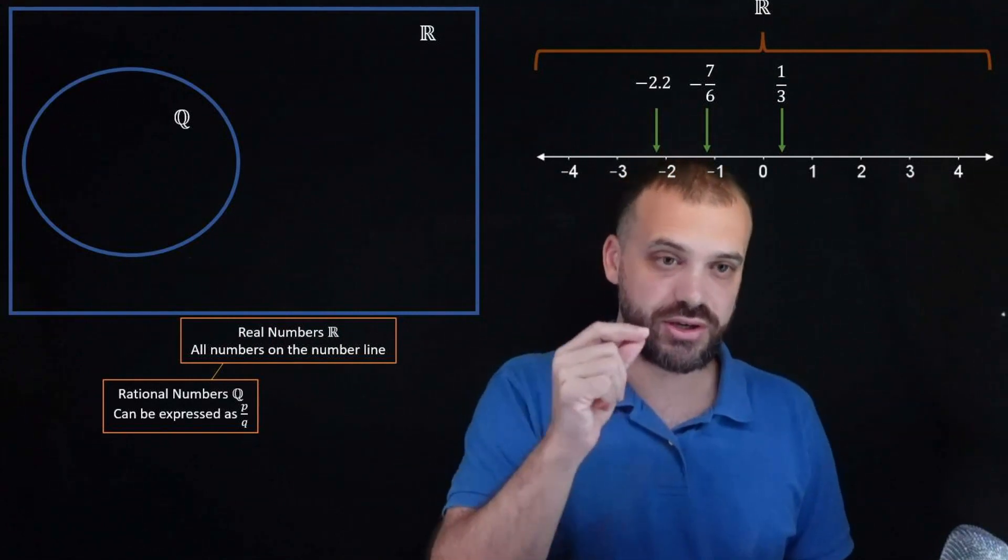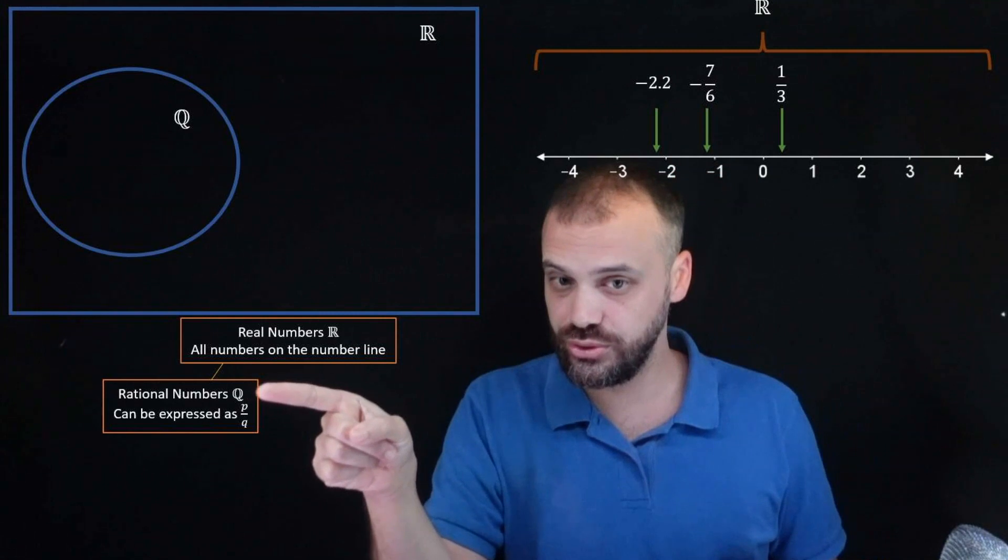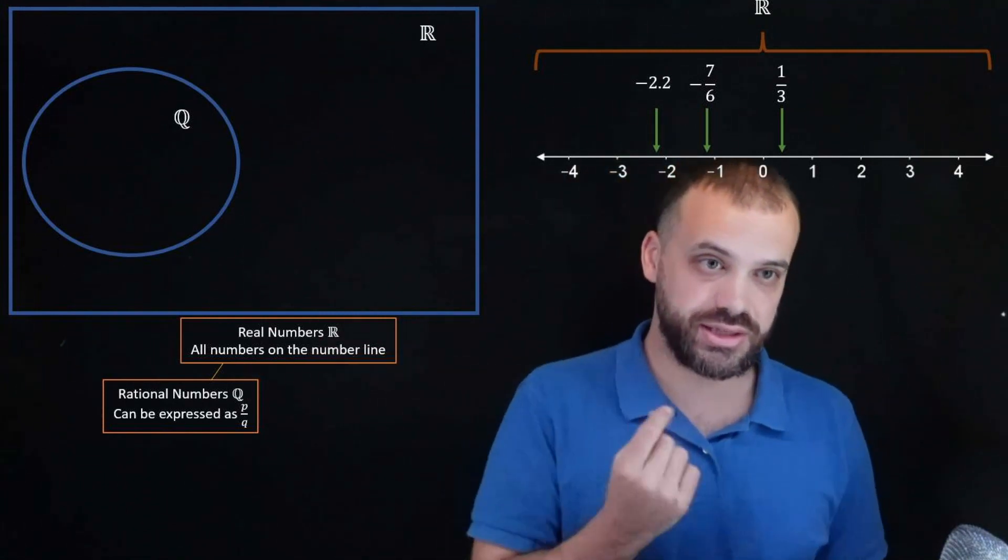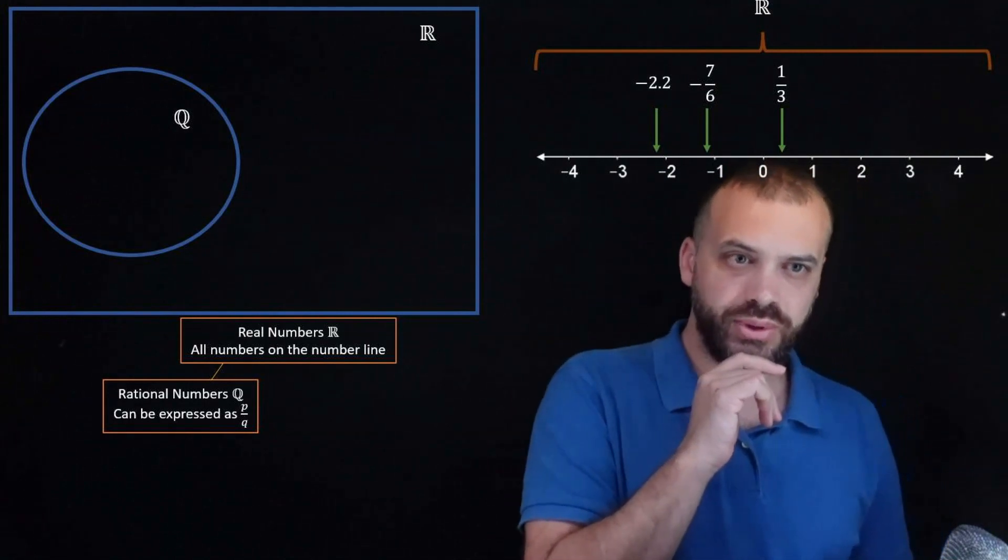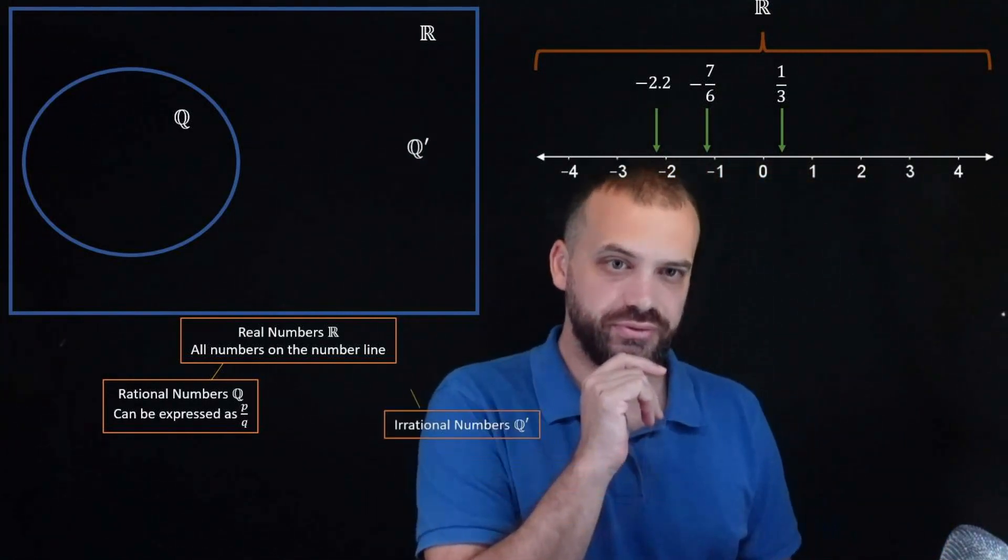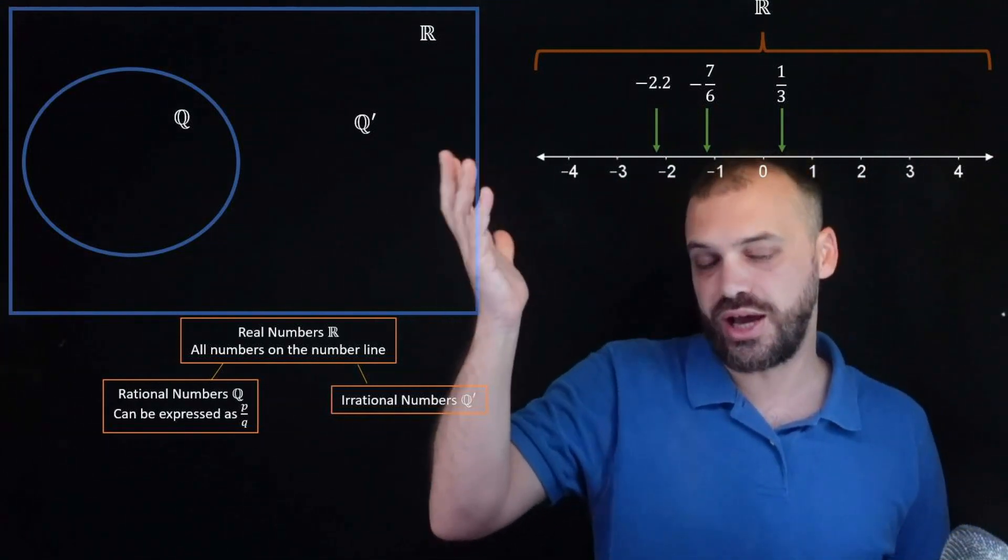So far you need to remember what a double struck R looks like and what a double struck Q looks like and what they stand for. All right, what else do we have? Well we have all the other stuff, the irrational numbers which we're going to call Q dash.